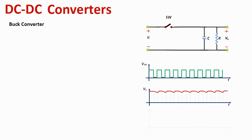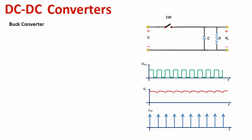Looking at the current through the switch, it will spike every time the switch closes, as it rushes to recharge the capacitor. This RC-only circuit has several disadvantages: first, we cannot control the output voltage — it is fixed at around Vi. Second, there is ripple on the output. Third, there are current spikes through the switch. So this is not a good solution.